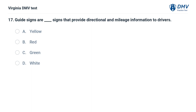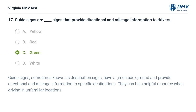Guide signs are — fill in the blank — signs that provide directional and mileage information to drivers. A. Yellow, B. Red, C. Green, D. White. The correct answer is C: Green. Guide signs, sometimes known as destination signs, have a green background and provide directional and mileage information to specific destinations. They can be a helpful resource when driving in unfamiliar locations.